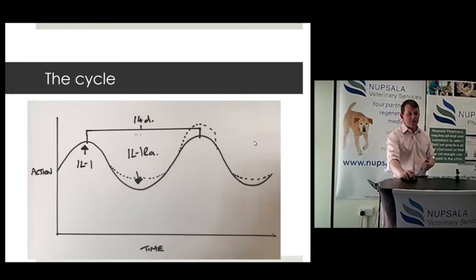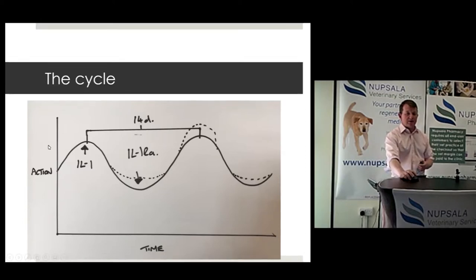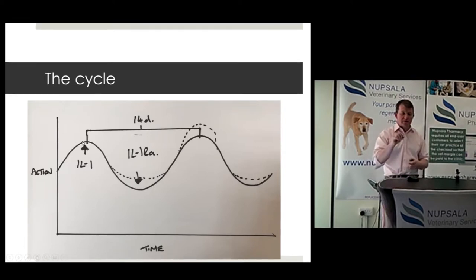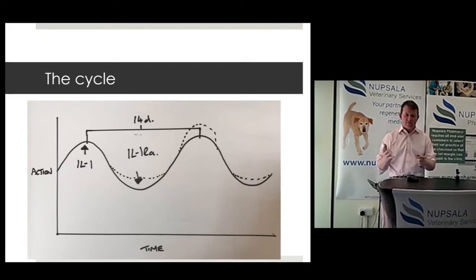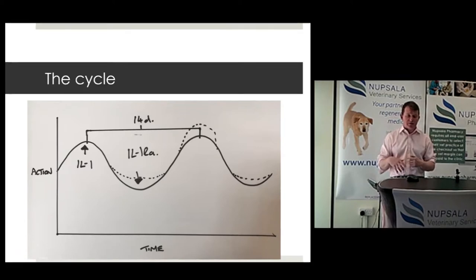Looking at this chart: as interleukin-1 starts to climb, it has an inflammatory and deleterious action. Interleukin-1 is your main inflammatory cytokine — not the only one, but a dominant one whose mechanism we understand. Interestingly, IL-1 actually has a beneficial role; it's a cytokine that also controls cell turnover.